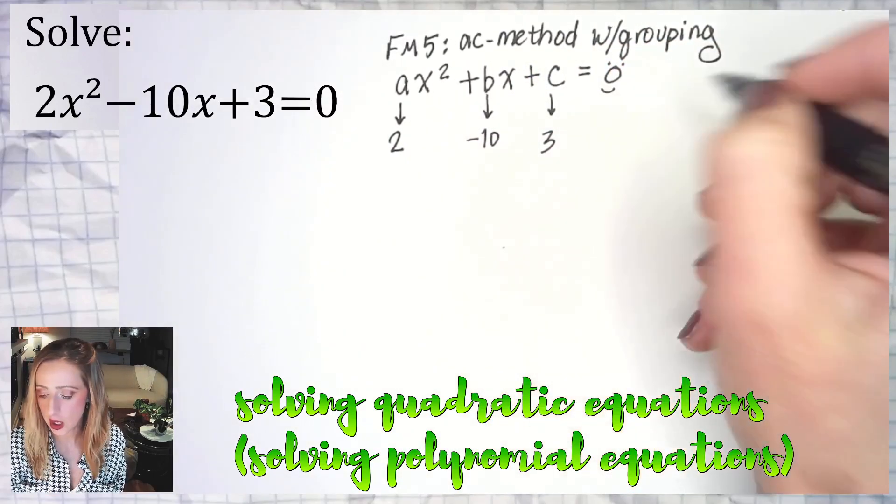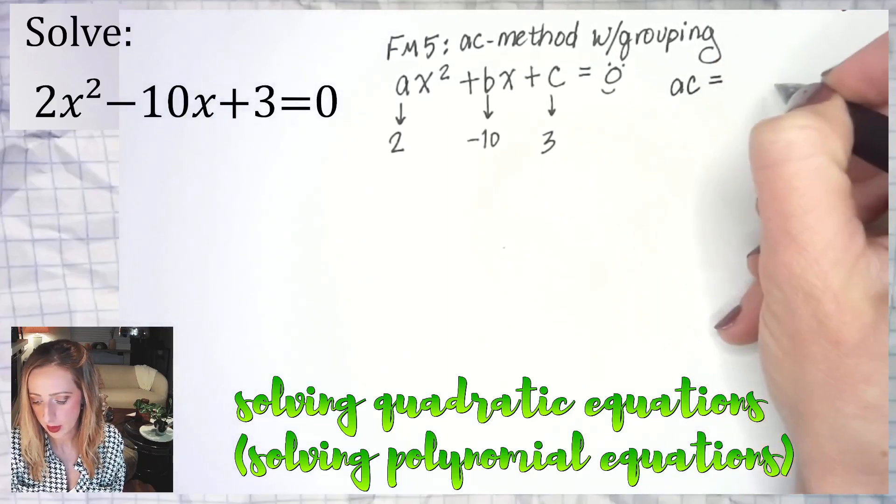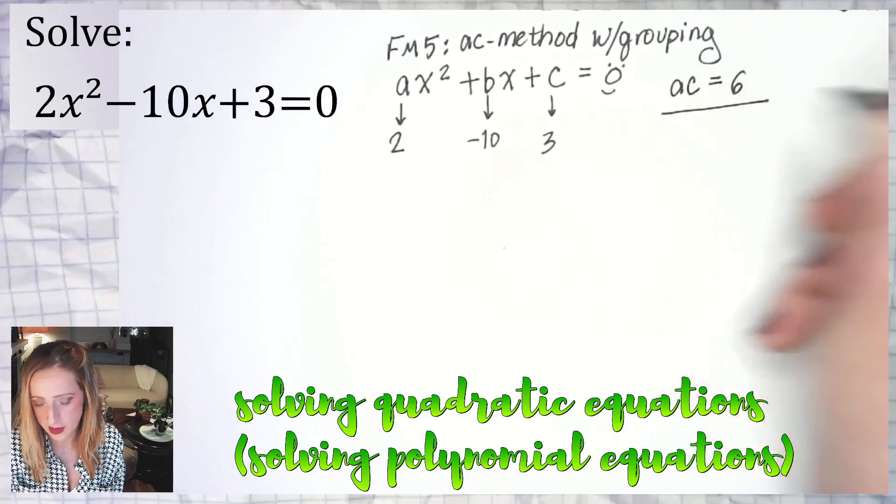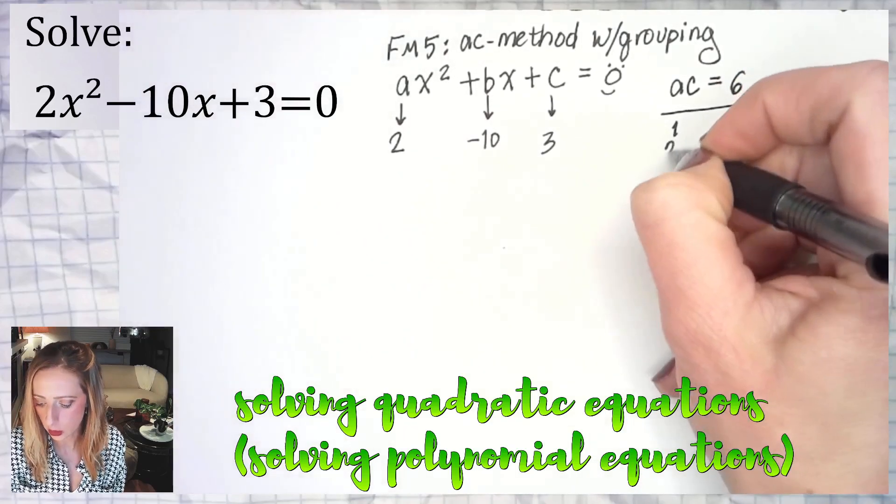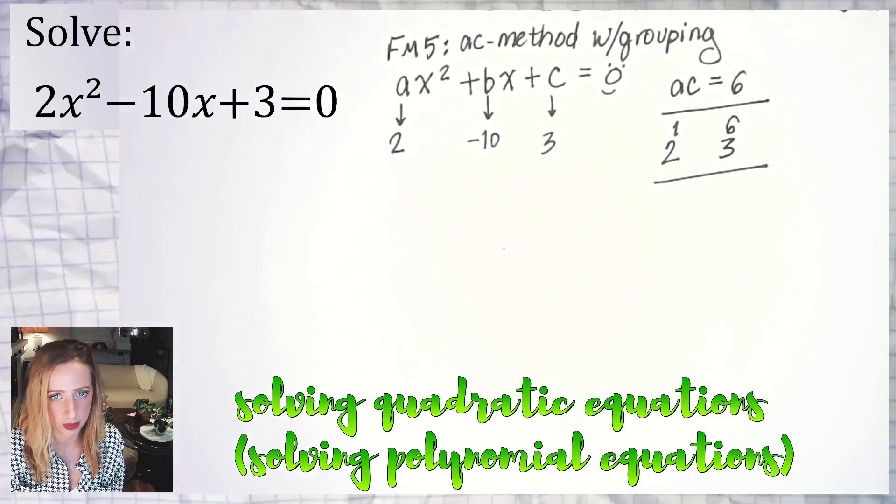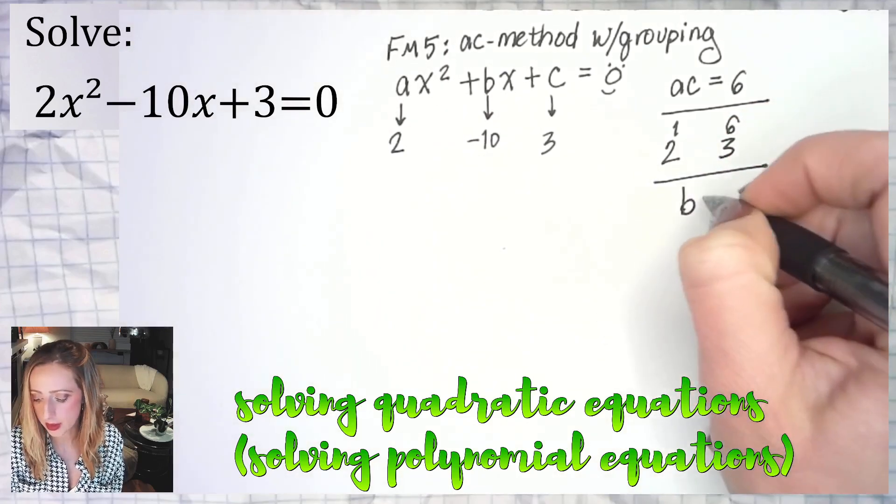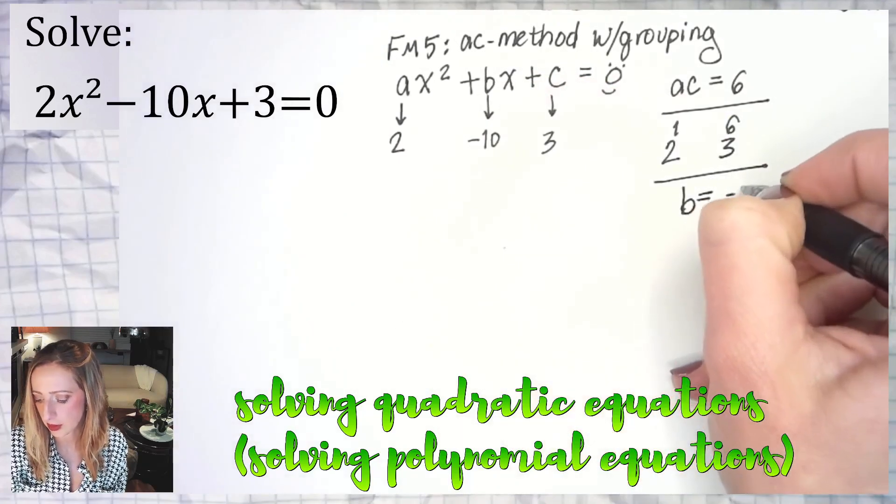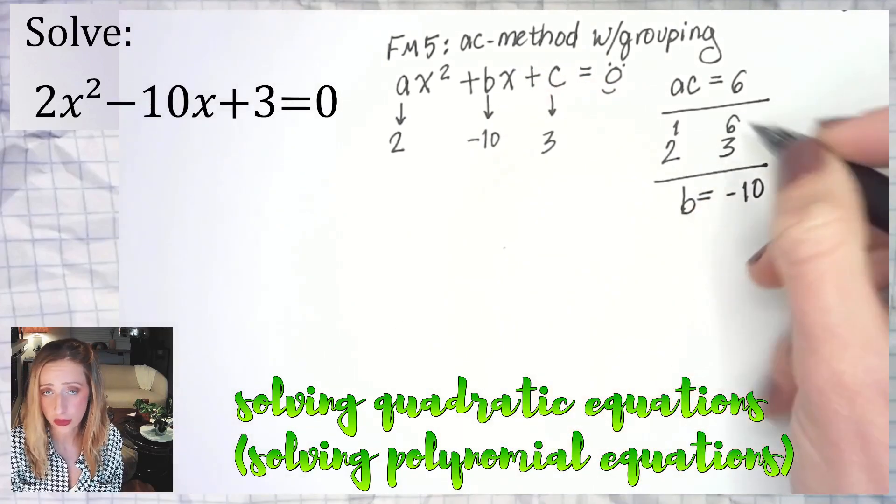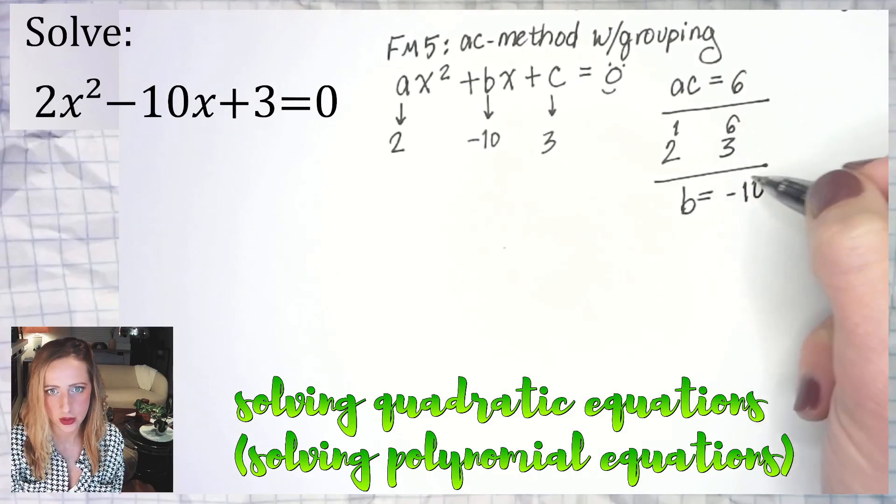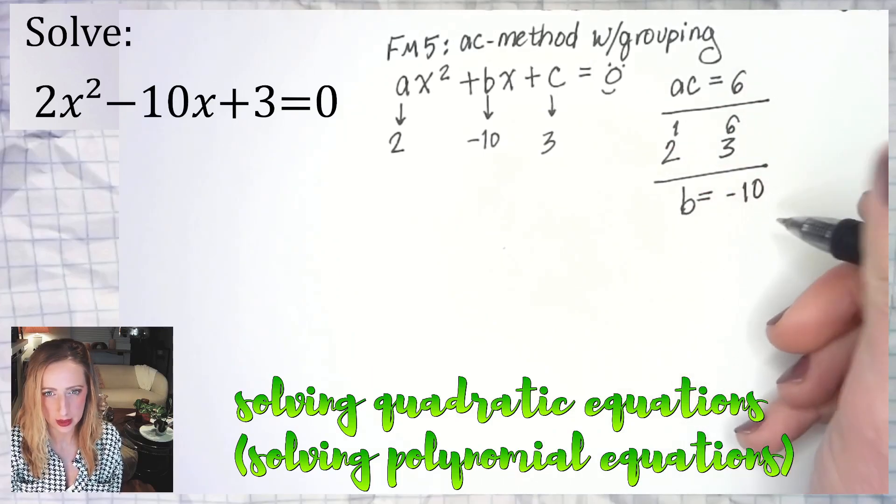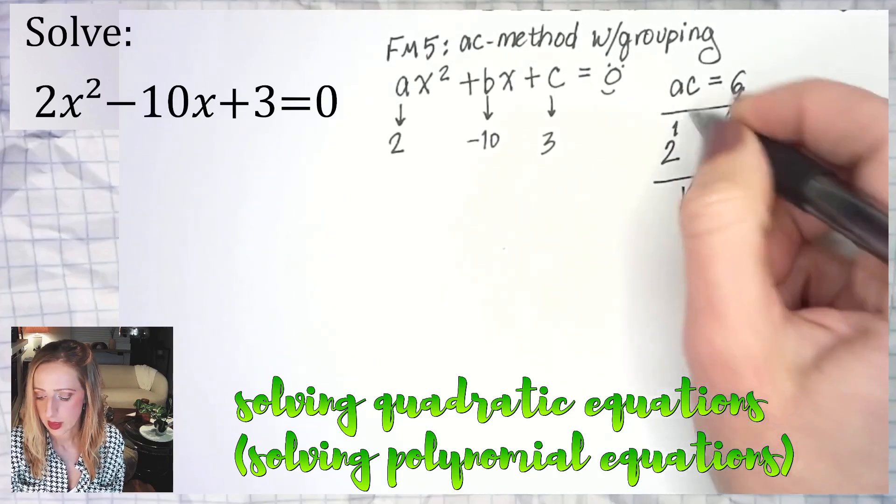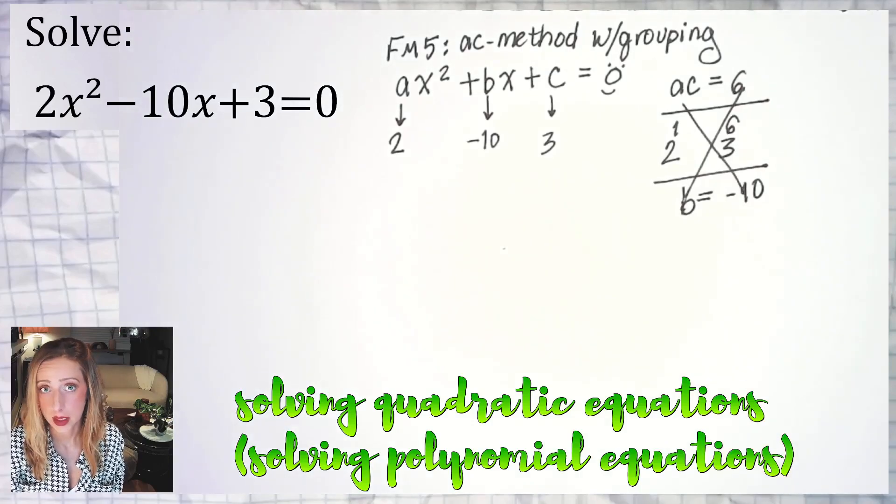So what we'll do to start is you're going to take the product of A times C. In this case, six, positive six. The sign does matter. We're going to list off things that multiply to give us that starting at one, go down the list, two times three. And then at the bottom of the list, B for bottom, we check our B value, negative 10. Is there a way I could take one of these pairs of numbers and add or subtract them in such a way that I would get negative 10? The answer is absolutely not.